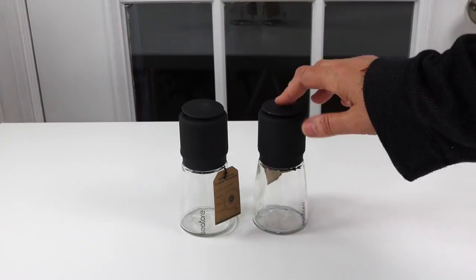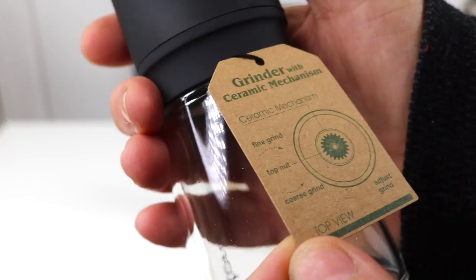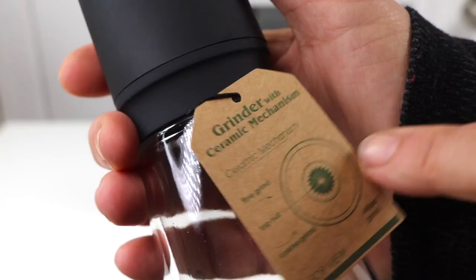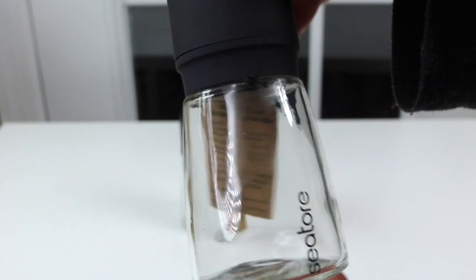We have a grinder with ceramic mechanism. You can adjust the grind from fine to coarse by adjusting this little nut at the top. So it's adjustable and overall it's very pretty, very simple design. I'm liking it a lot.